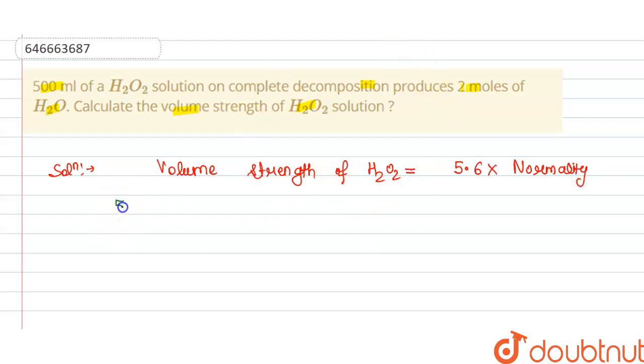So we calculate the normality here. Firstly, so we have the 500 ml solution produces 2 moles of H2O. So 1 liter will produce 4 moles of H2O2.